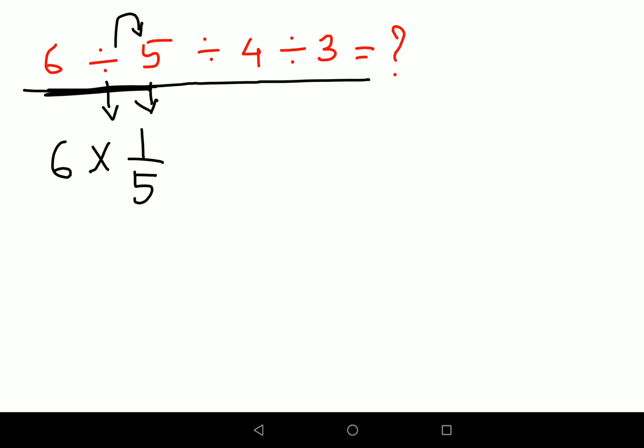Similarly, I will change the division sign to multiplication, and the reciprocal of 4 is 1 upon 4. For division by 3, I can write this as multiplying by 1 upon 3.